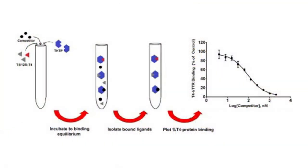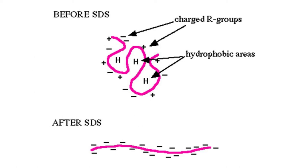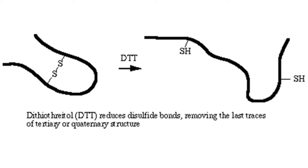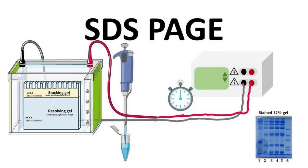Once you've quenched your samples, boiled them, and stopped your reactions, you need to see what happened to your protein of interest. Now you have to electrophorese your samples. The full name of the technique for measuring protein is SDS-PAGE: sodium dodecyl sulfate polyacrylamide gel electrophoresis.